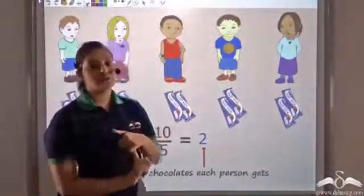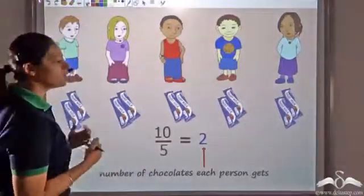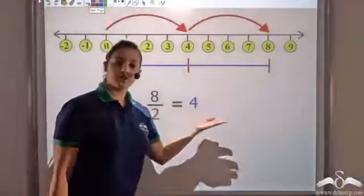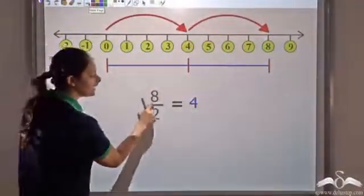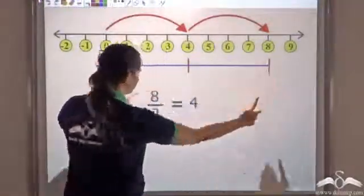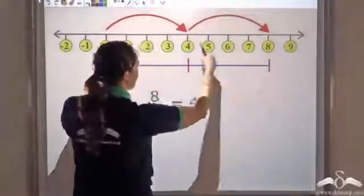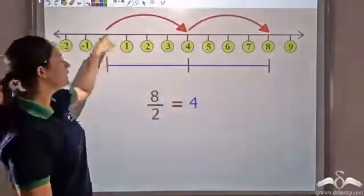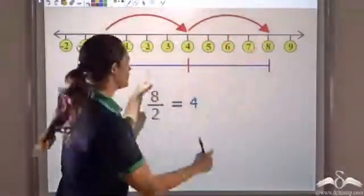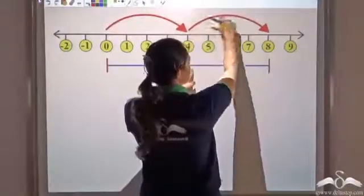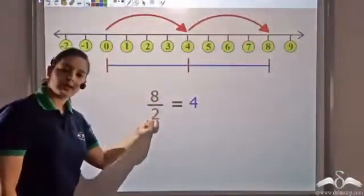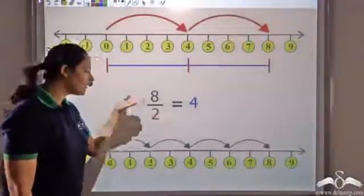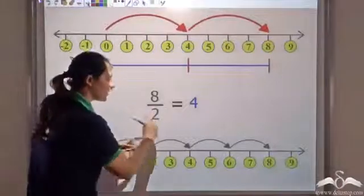Now let's try to visualize division on a number line. We have seen that eight divided by two was four. If I want to visualize this, I take a length of eight and divide it into two equal parts. What does this four tell me? Four tells me the length of each part — each equal part is of length four. Another way to interpret eight divided by two would be: how many twos actually fit into eight?